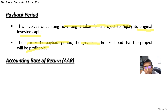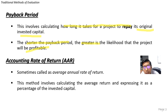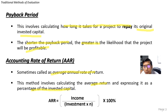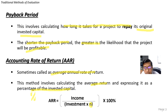For accounting rate of return, also known as the average annual rate of return, this method involves calculating the average rate of return and expressing it as a percentage of the invested capital — essentially how much you can gain from your investment. The formula is: income divided by investment times N, where N is the period, multiplied by 100%. Accounting rate of return is expressed as a percentage.